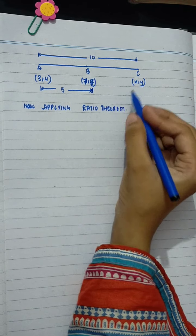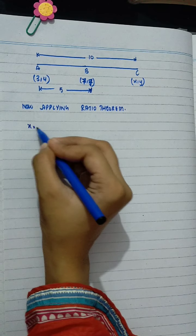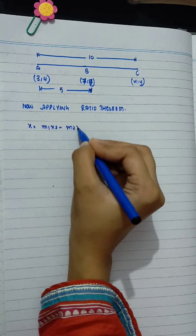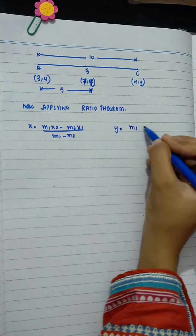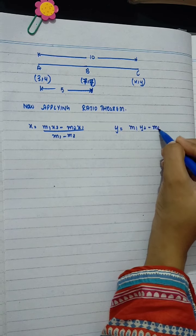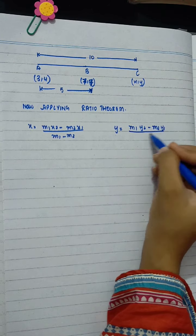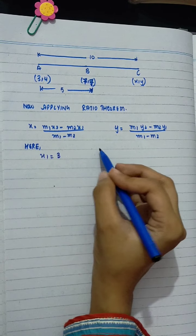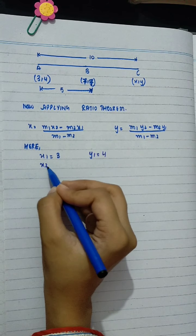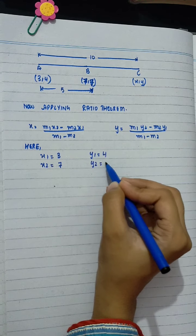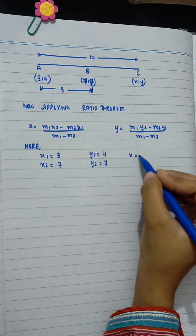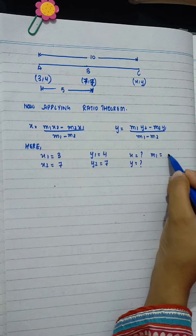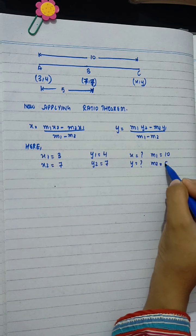X equals M1 X2 minus M2 X1 divided by M1 minus M2. Y is equals to M1 Y2 minus M2 Y1 divided by M1 minus M2. Here X1 is equals to 3, Y1 equals to 4, X2 is 7, Y2 is 7. M1 is equals to 10 and M2 is 5.